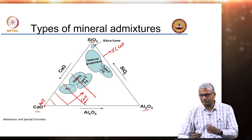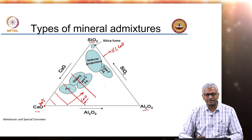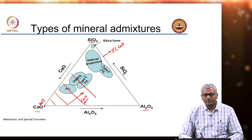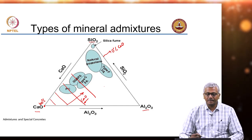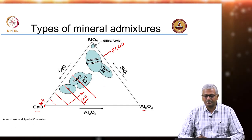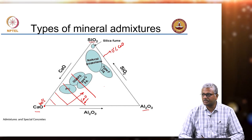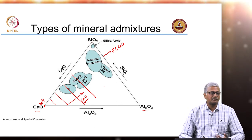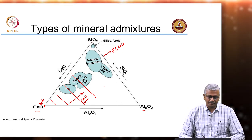The fraction decreases in the other direction or increases in this direction. So that is called the ternary diagram and usually this ternary diagram representation is used for many of the cementitious materials.